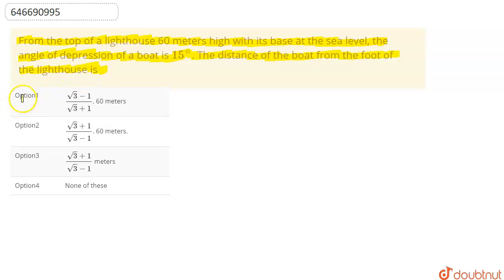...and these are the given four options. Okay, so let's solve this question. So let's say this is lighthouse and this is sea level. And now we have given angle of depression is 15 degrees, so this is 15 degrees, so this also will be equals to 15 degrees. And we have given...